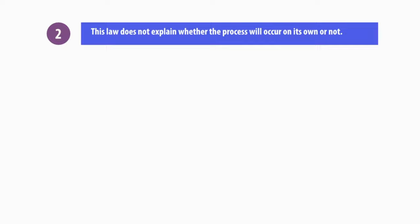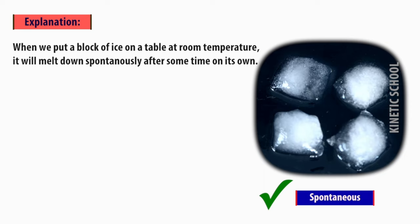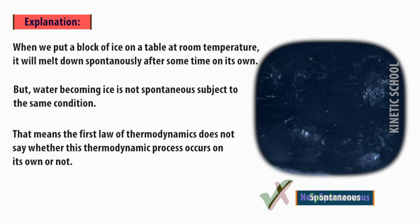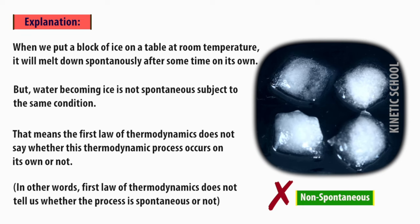Number two, this law does not explain whether the process will occur on its own or not, such as melting of ice at room temperature. When we put a block of ice on a table at room temperature, it will melt down spontaneously after some time on its own. But water becoming ice is not spontaneous under the same conditions. That means the first law of thermodynamics does not say whether this thermodynamic process occurs on its own or not. In other words, the first law does not tell us whether the process is spontaneous or not.